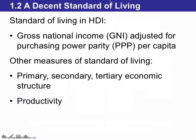The first part of the HDI is the standard of living. The standard of living is made up of the gross national income, or GNI — how much money each country makes — adjusted for purchasing power parity, abbreviated as PPP per capita. Other measures of standard of living include how many people work in primary, secondary, and tertiary economic activities, and how productive people are — in other words, how much they produce.